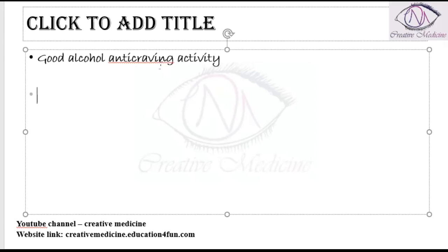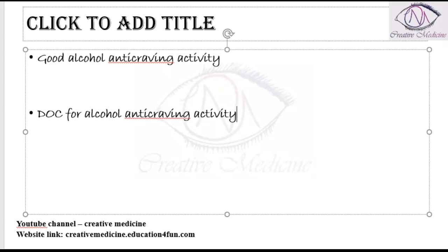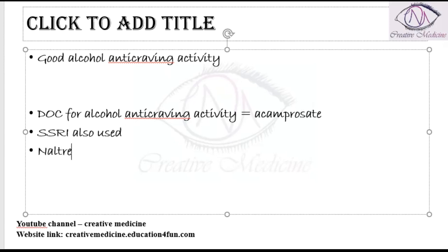Topiramate also has good alcohol anti-craving activity, so it can be used for stopping alcohol craving, but it is not the drug of choice. The drug of choice for alcohol anti-craving activity is acamprosate. SSRIs can also be used for alcohol anti-craving, and naltrexone is used to reduce the relapse of alcohol abuse.